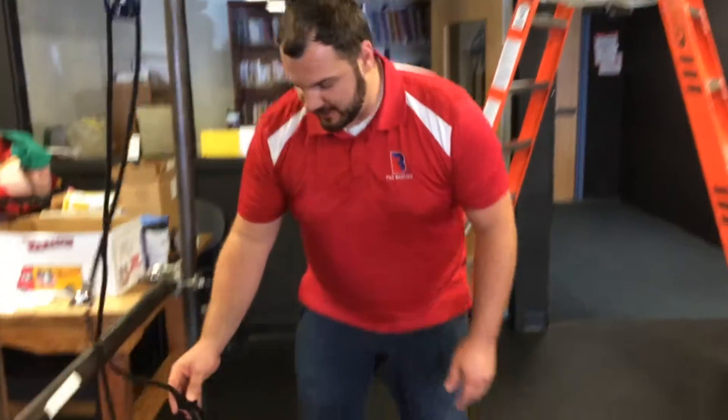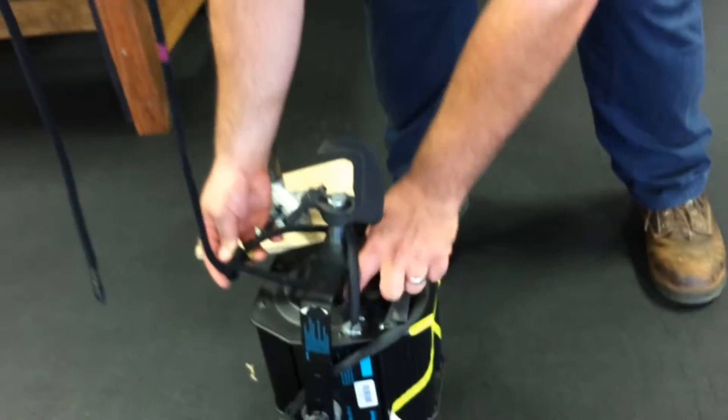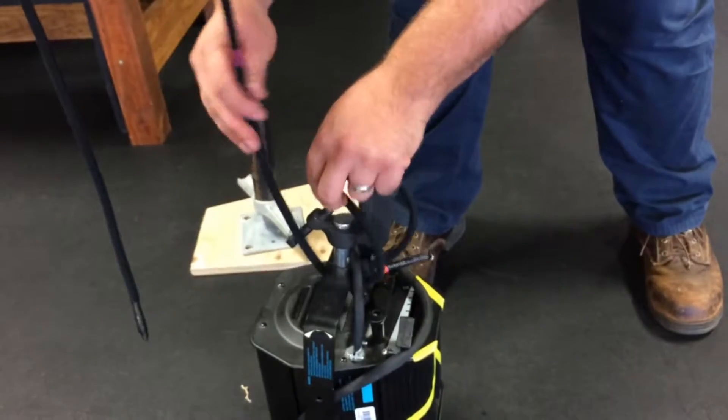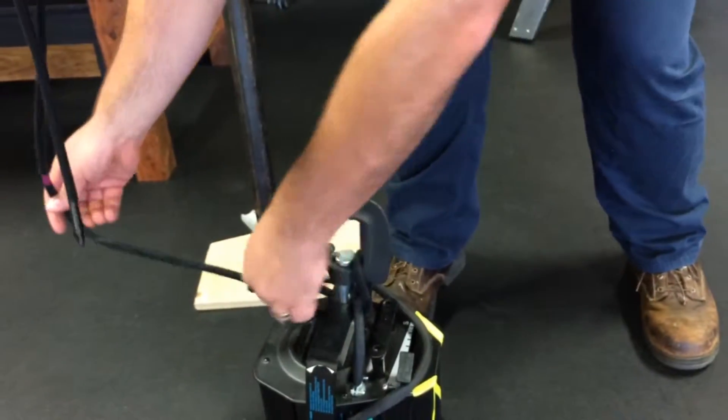Once we have our bowline, we go under the light, around to the C-clamp to grip it.